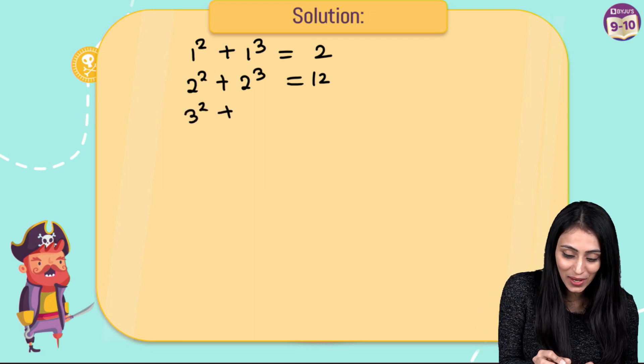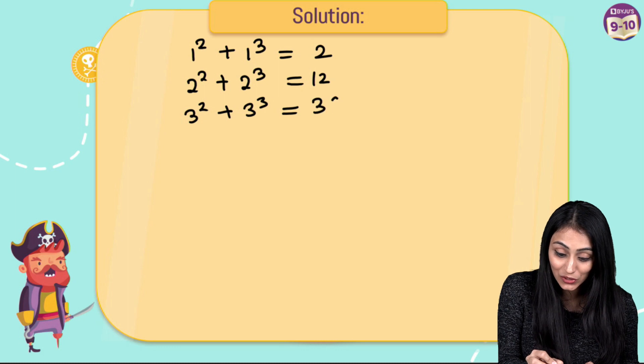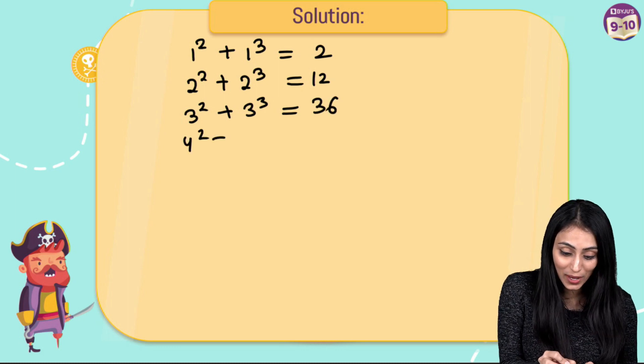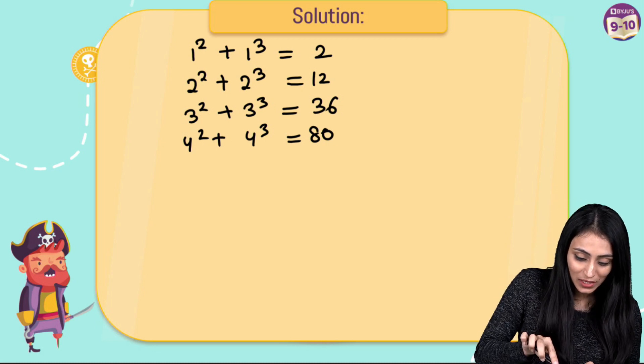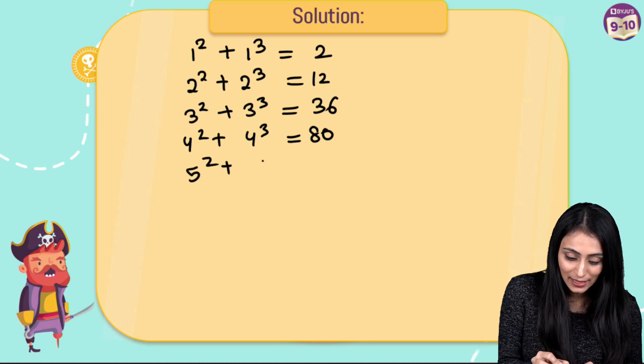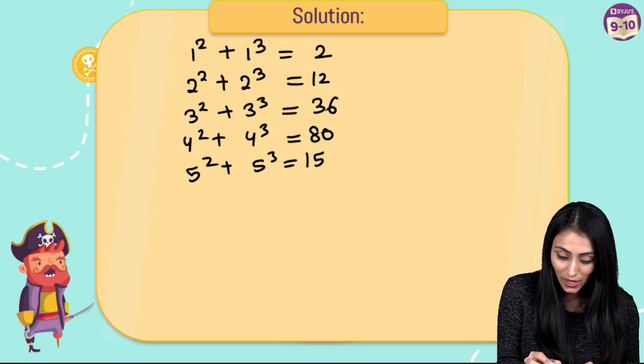Another one would be 3 square plus 3 cube, that's going to be 36. Then 4 square plus 4 cube, that gives us 80. And then 5 square plus 5 cube, that's going to be equals to 150.